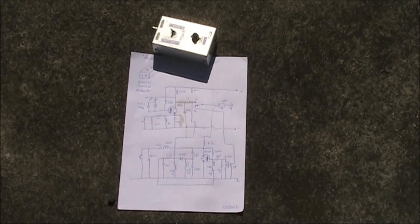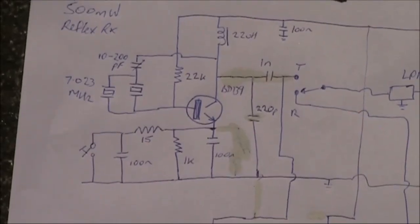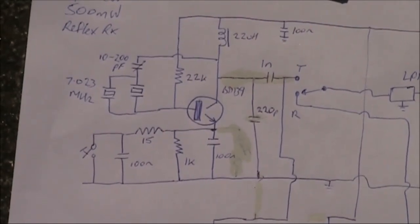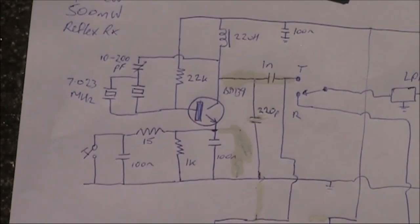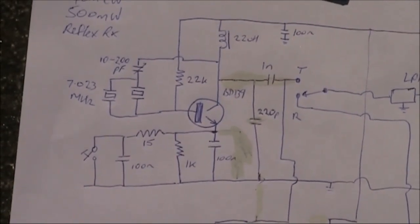Here's the circuit. I'll zoom in so you can get a closer look. This is the transmitter portion. It's crystal controlled, with crystal frequency of 7023 kilohertz, commonly available from eBay.